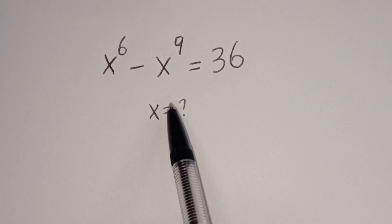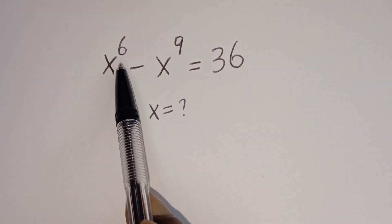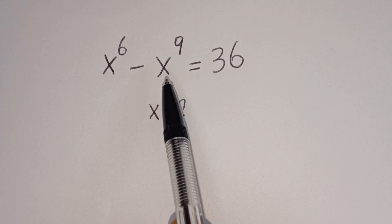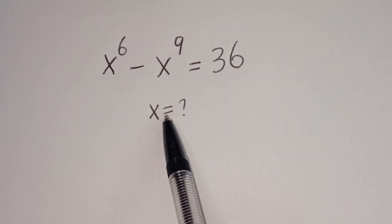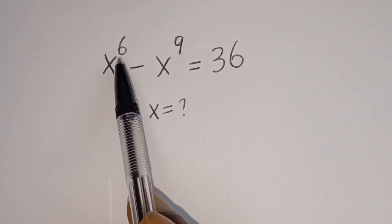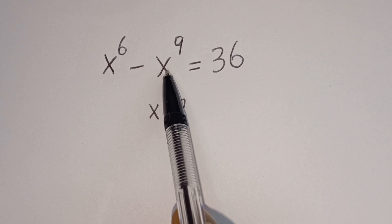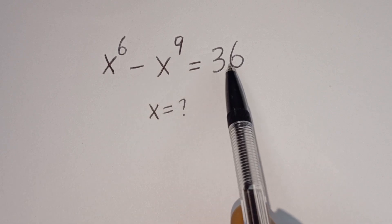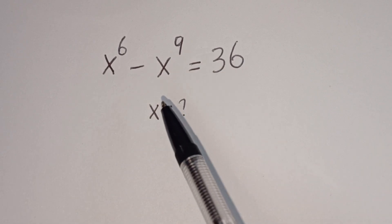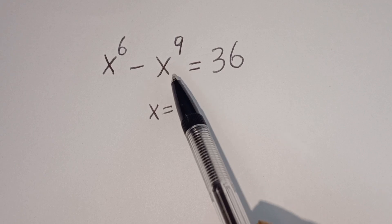Hello. How to solve for s in this equation: s to the power of 6 minus x to the power of 9 is equal to 36. We want to find the value of s from this equation.